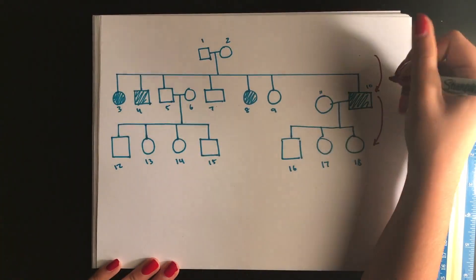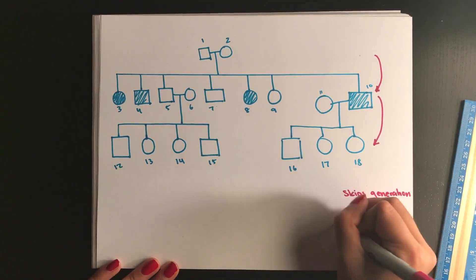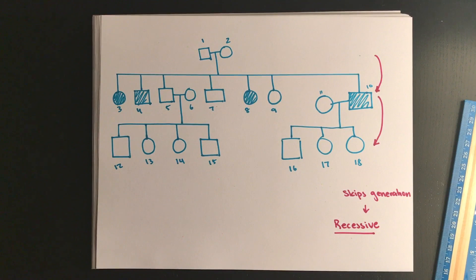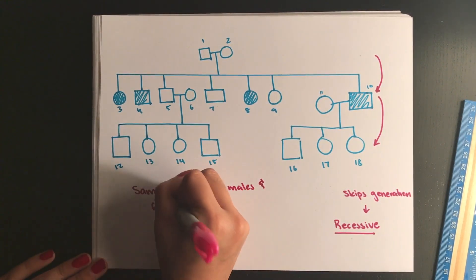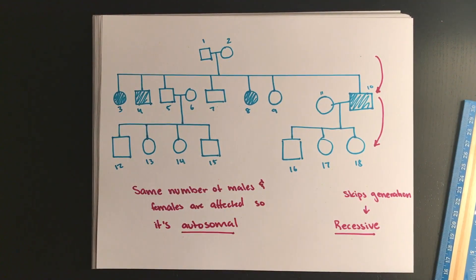To answer the first question, recessive conditions typically skip a generation, so if you notice on the pattern that between generations you have affected and then unaffected individuals, it's likely going to be a recessive condition. To determine whether it is sex-linked, a shortcut is to count the number of males and females.